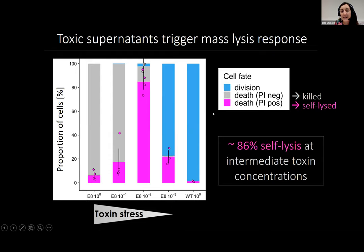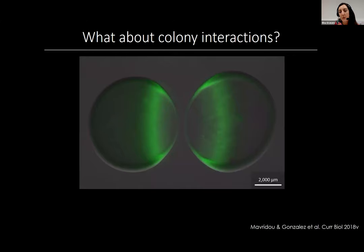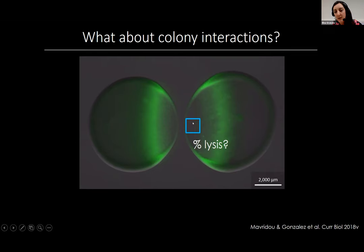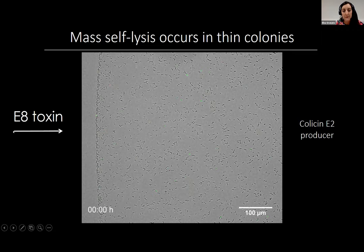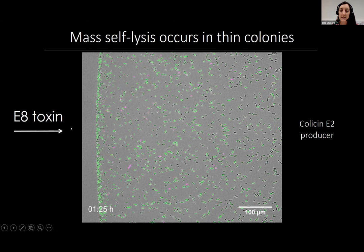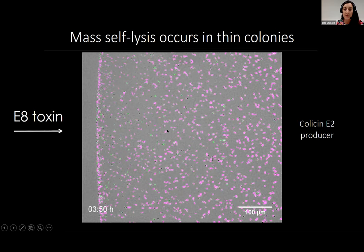Next we wanted to check if that happens to the same degree at the interface between two interacting colonies, since the controlled experiment might not represent nature. We looked at interacting colonies and zoomed into the colony edge of a reporter strain experiencing a competitor growing right next to it, with toxin fusing over from the side. Here we watch a video where competitor toxin flows in from the left side, and we can watch the cells react to that DNA attack. The vast majority of cells turn first green and then pink, telling us they experienced DNA damage and then decided to self-lyse in response to release their own toxins.